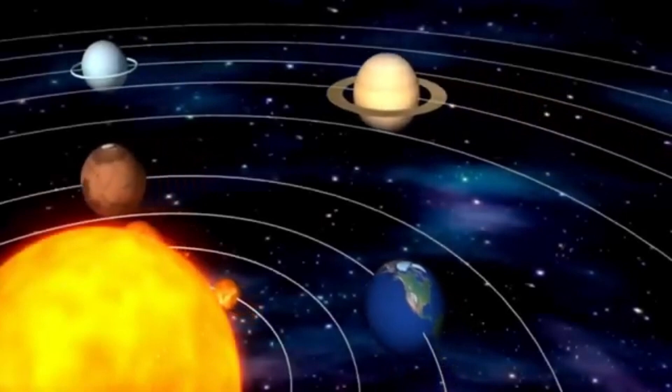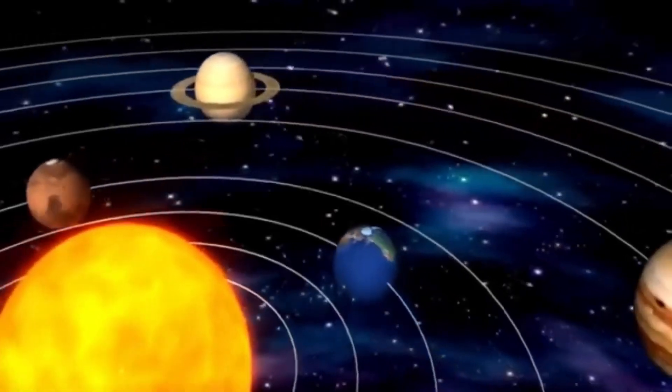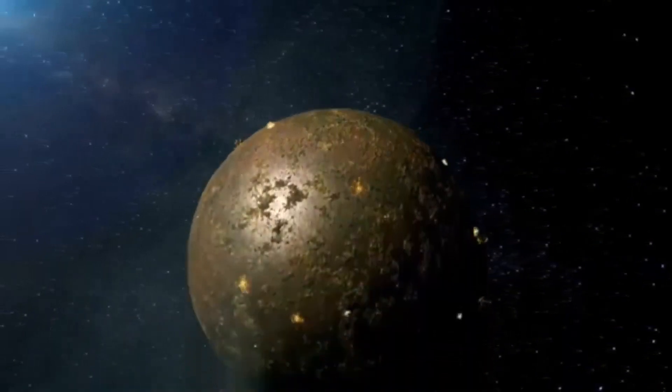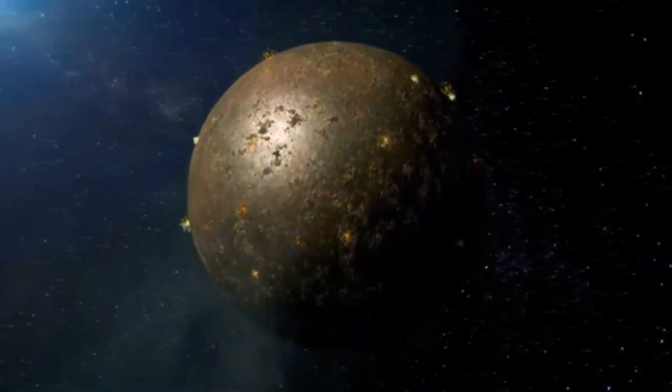In the constellation Orion, this red supergiant looms, a titan so massive that if it sat where our sun does, it would swallow Mercury, Venus, Earth, and Mars, reaching past Jupiter's orbit.